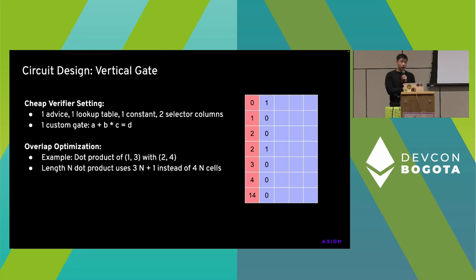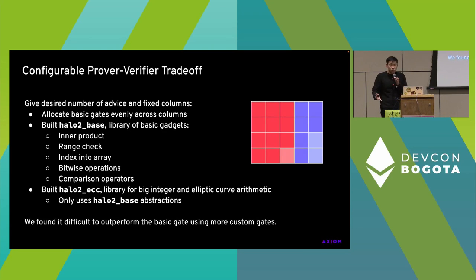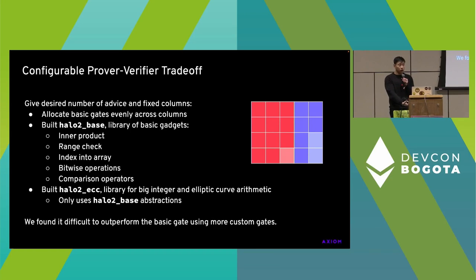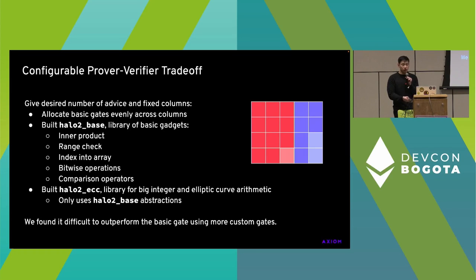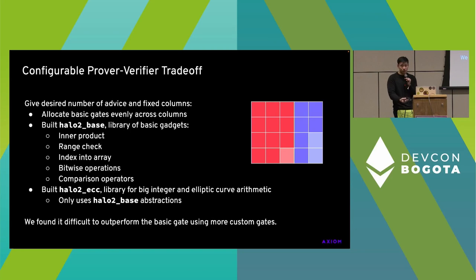Our setup has a number of advice columns with this custom gate enabled, a single lookup table for range checks, and a bunch of selector columns. We wrote a pseudo layouter in Halo 2 which allows us to configure where these columns are placed in different regions. As a configuration to our circuit, we allow a fixed number of advice and fixed columns, and we tetris these vertical concatenations of our basic gate into the columns. On top of this, we built a basic library called Halo 2 Base of basic gadgets like inner product, range check, indexing into an array, various bitwise operations, and comparisons. That allows us to almost completely abstract away the manual assigning of cells. On top of that, we build our elliptic curve library, mostly — maybe 95% — only using these abstractions.